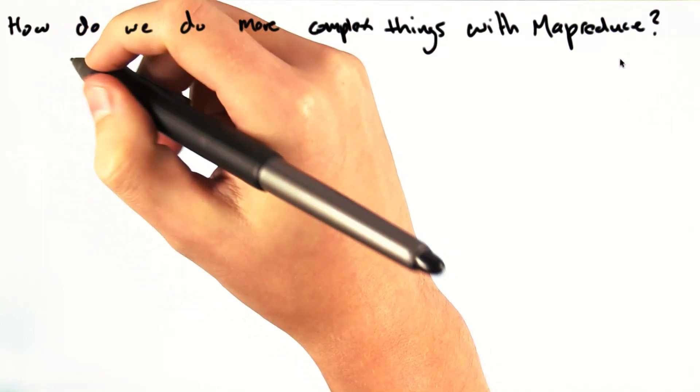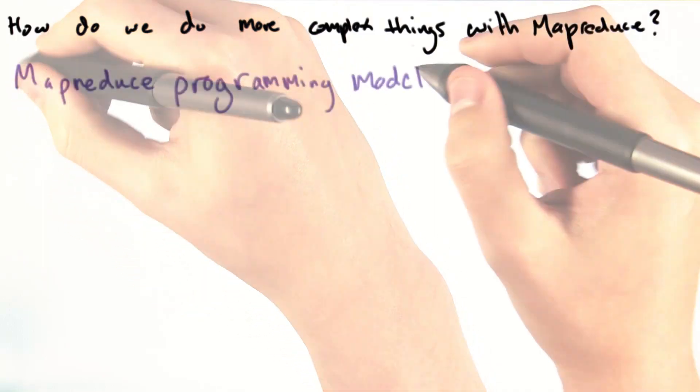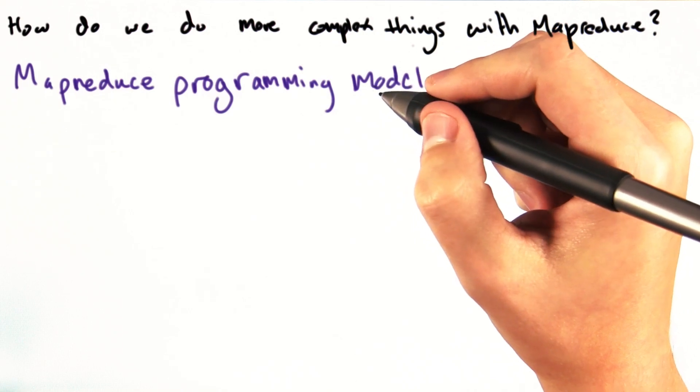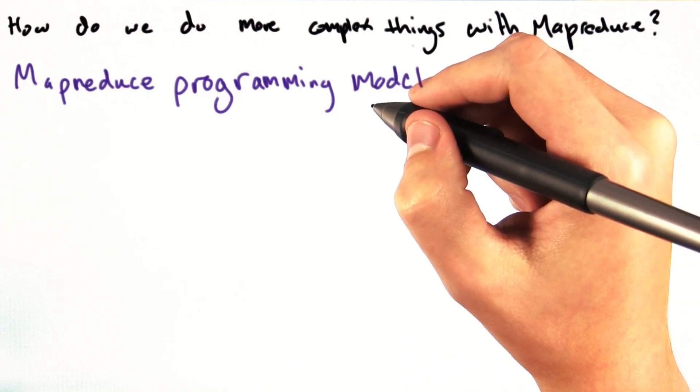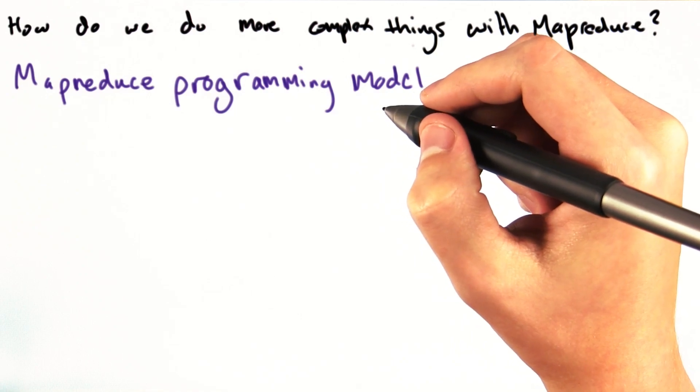During this lesson, we focused on the MapReduce programming model. A very common open source implementation of the MapReduce programming model is Hadoop. Hadoop couples the MapReduce programming model with a distributed file system.